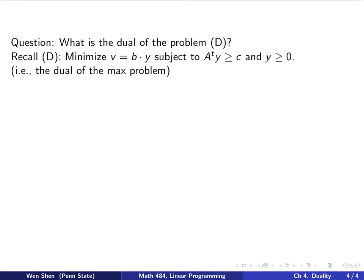Now let's ask a question. What is the dual of the problem D? Let's recall we labeled the problem D as the following: minimizing v is b dot y subject to A^T y bigger than c and y bigger than zero. And this is actually the dual of the original max problem.